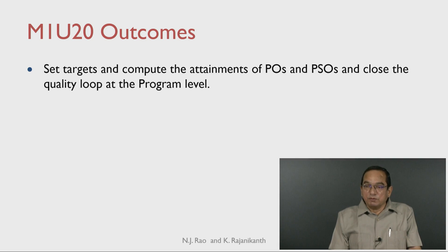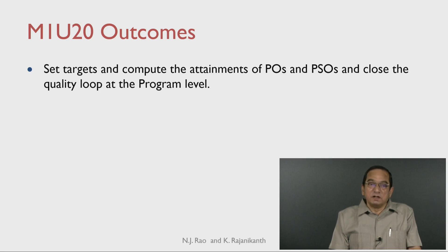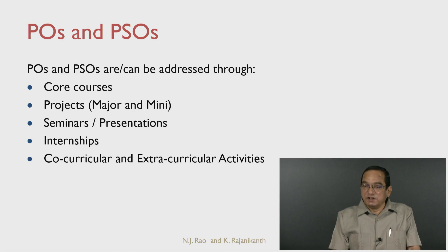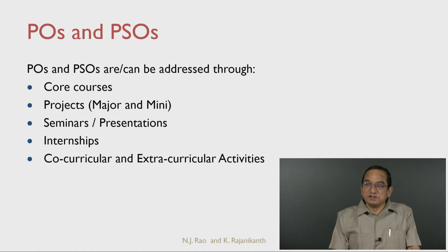The outcome for this unit is to set targets and compute the attainments of POs and PSOs and close the quality loop at the program level. We have already seen that POs and PSOs are addressed through core courses, projects — both major and mini — seminars, presentations, internships, and co-curricular and extracurricular activities in which all the students participate.